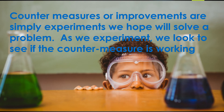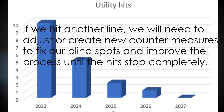Countermeasures or improvements are simply experiments we hope will solve a problem. As we experiment, we look to see if the countermeasure is working. If we hit another line, we need to adjust or create new countermeasures to fix our blind spots and improve the process until the hits stop completely.